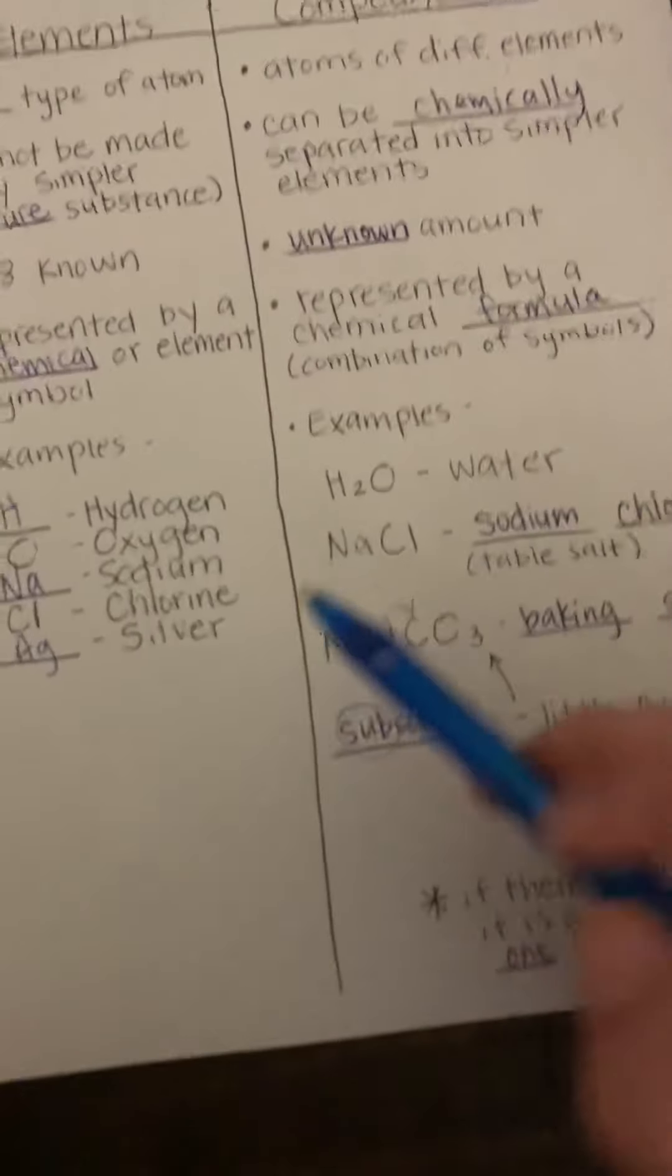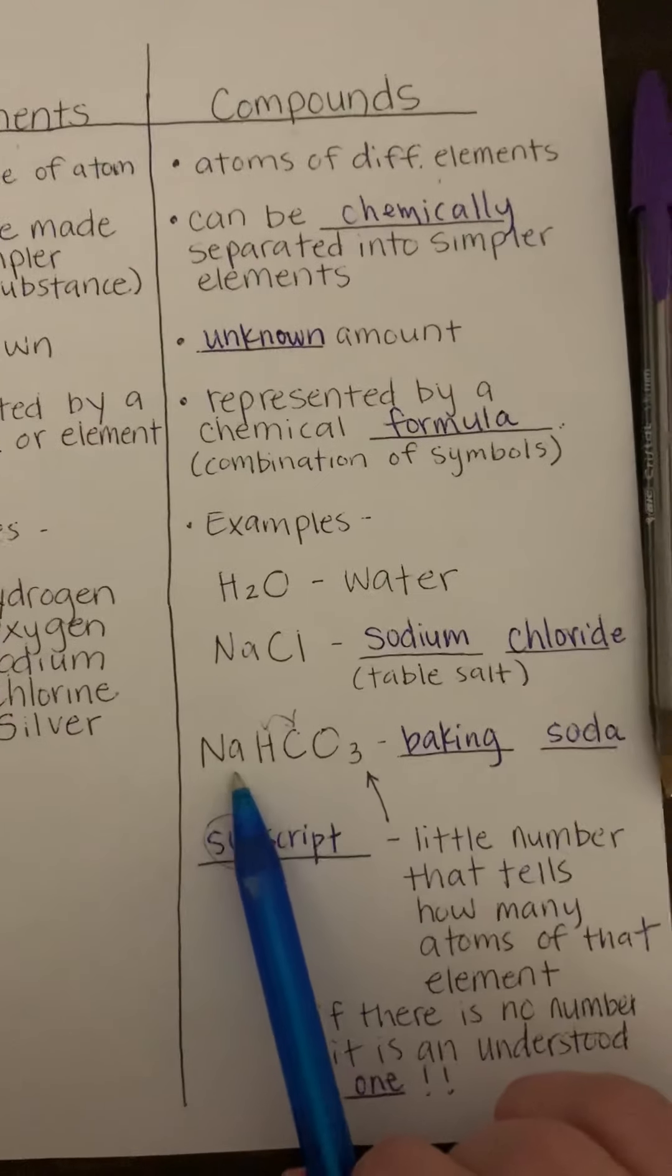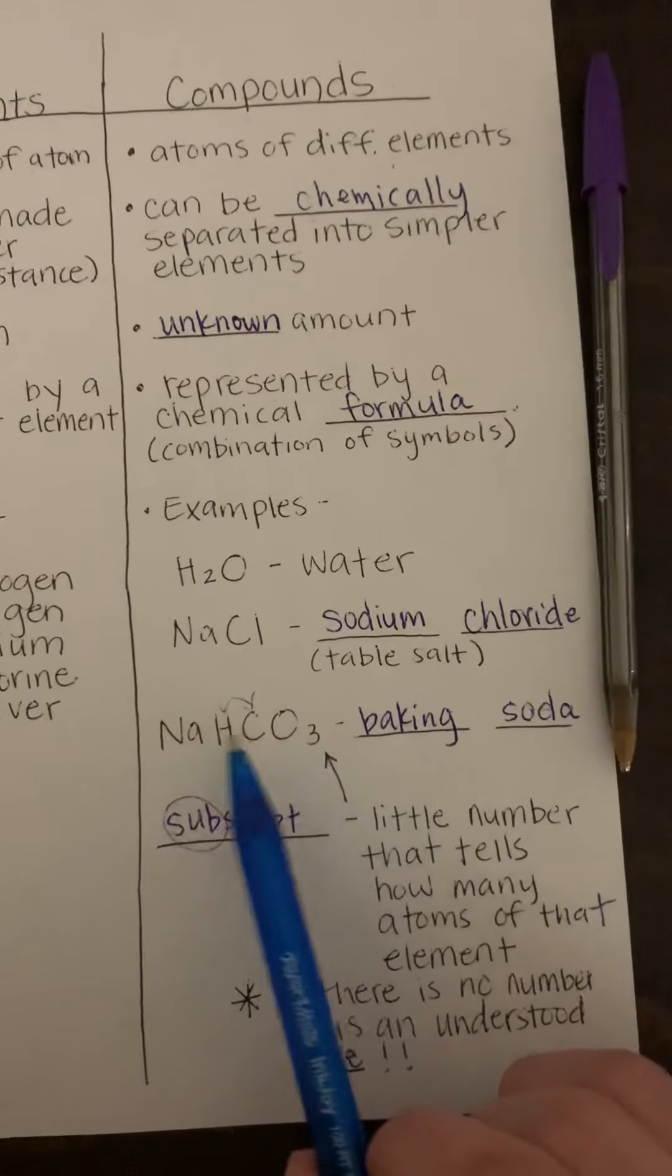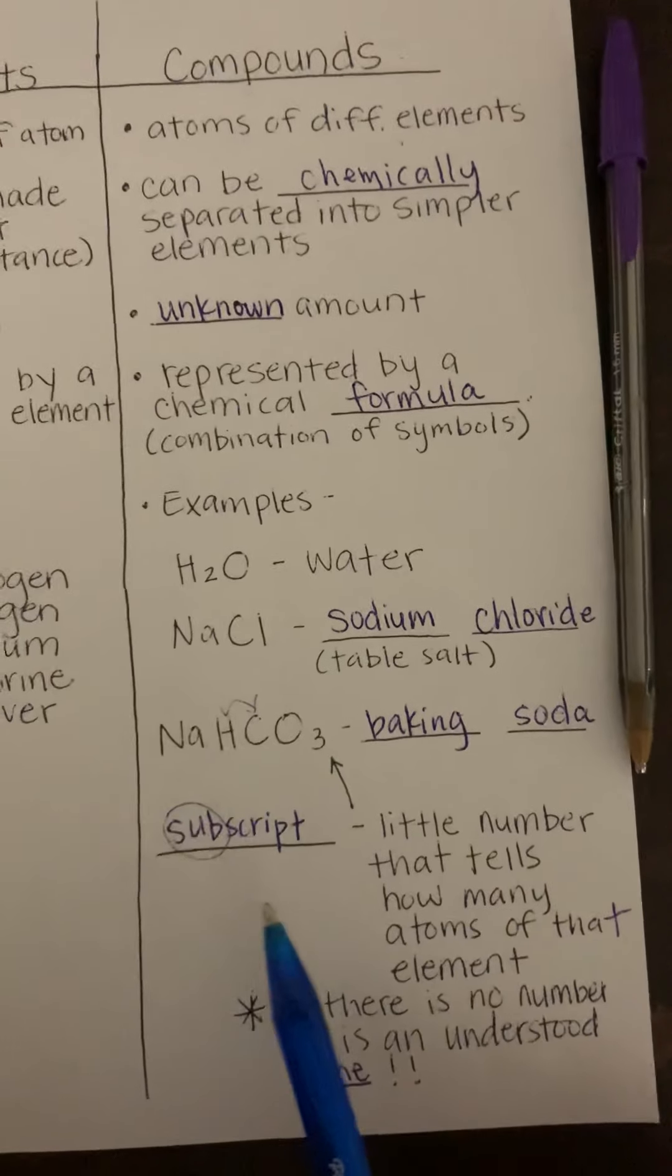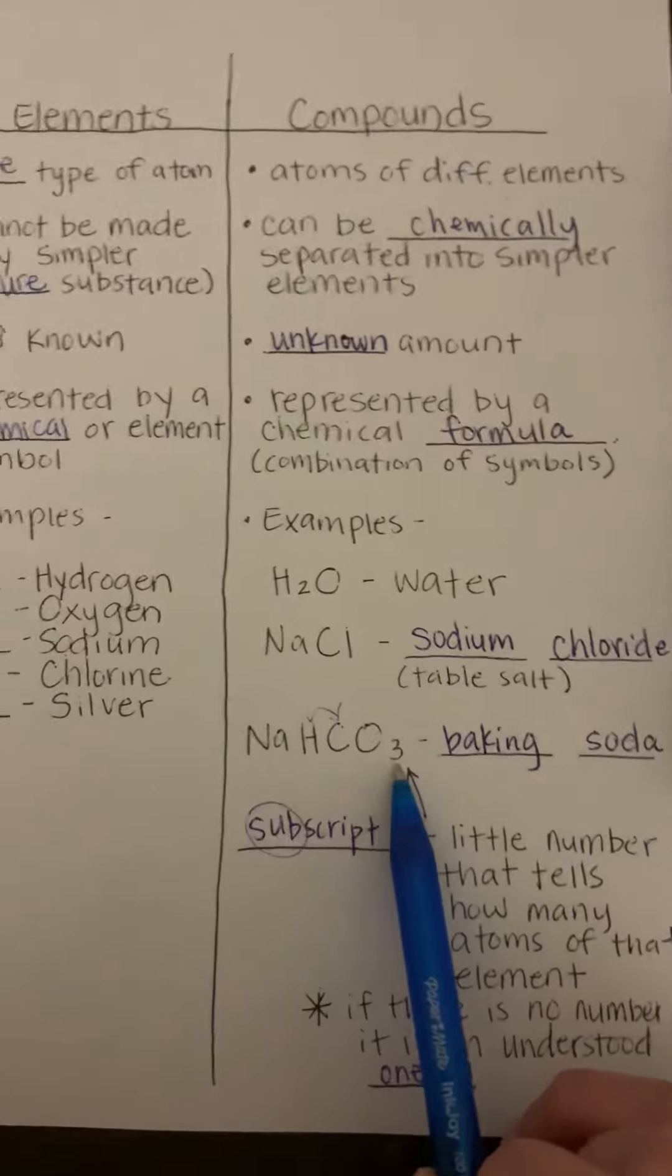Now, if you had to draw out or put together with Legos baking soda, you would have one sodium, one hydrogen, one carbon, and three oxygen.